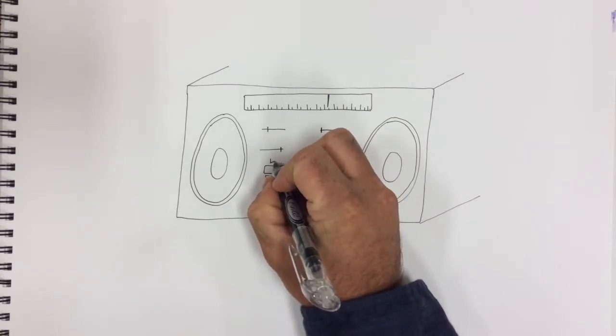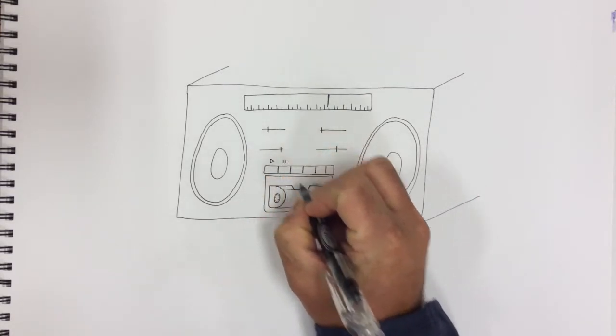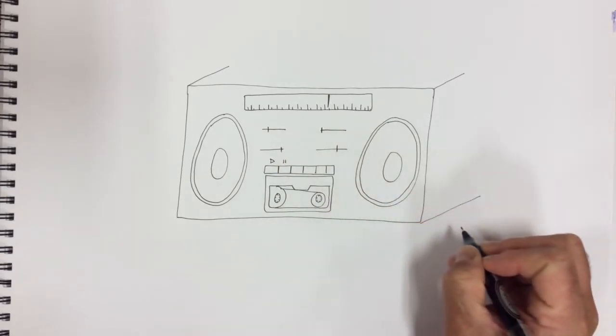Above the first button, put a triangle. The next one, an 11, which is the pause button. Just like an iPod.